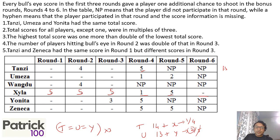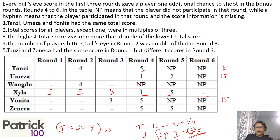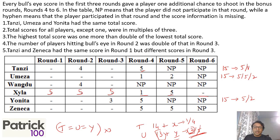So all three — T, U, and Y — have a total of 15. Why 15? Because Umiza scored 5, 5, and must have 2 in the third round: 5 plus 1 plus 2 gives 13, and adding 2 makes 15, which is a multiple of 3. For Tanzi, the 15 amounts to scoring 5 in one round and 1 in another. For Yonita, it will be 5 and 2. Umiza must have scored 5, 5, and 2 across the three rounds.